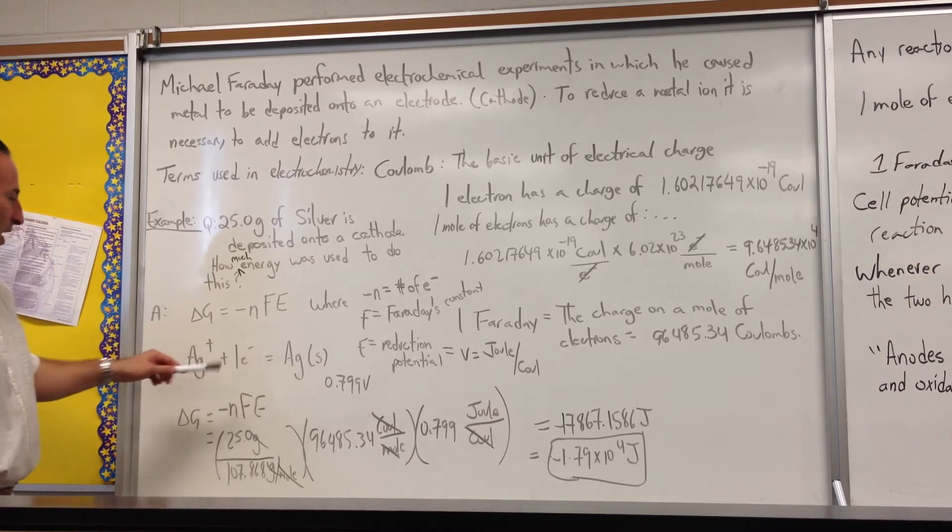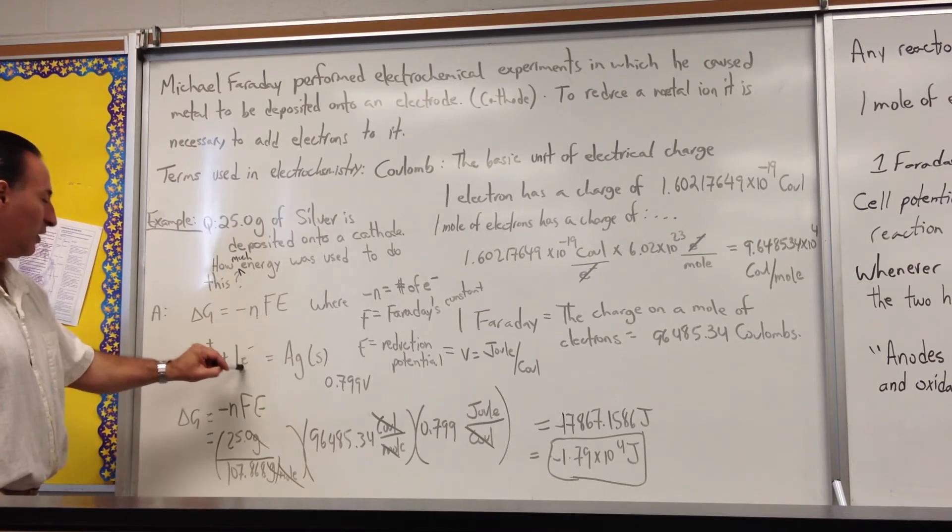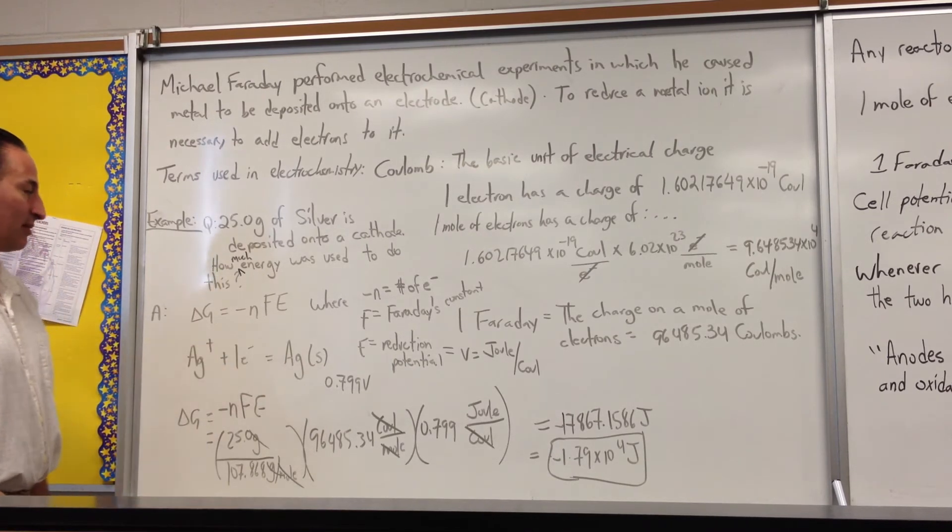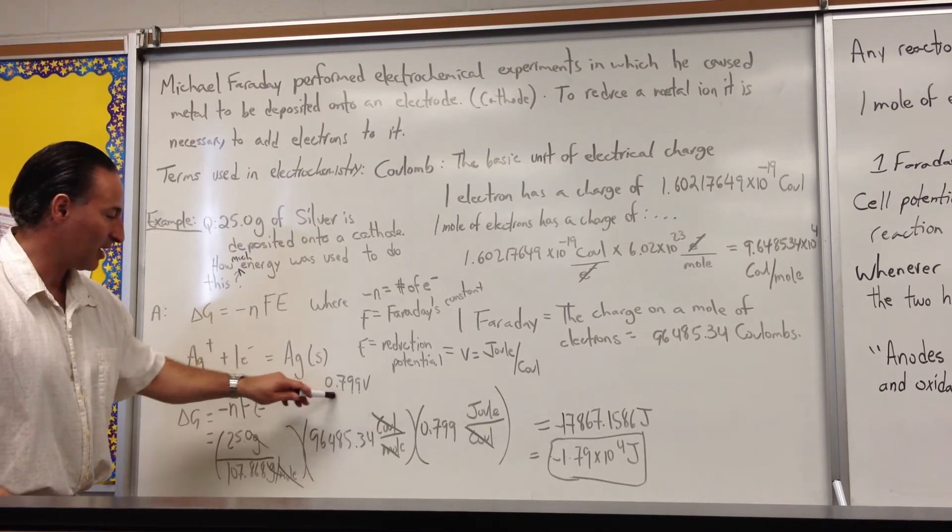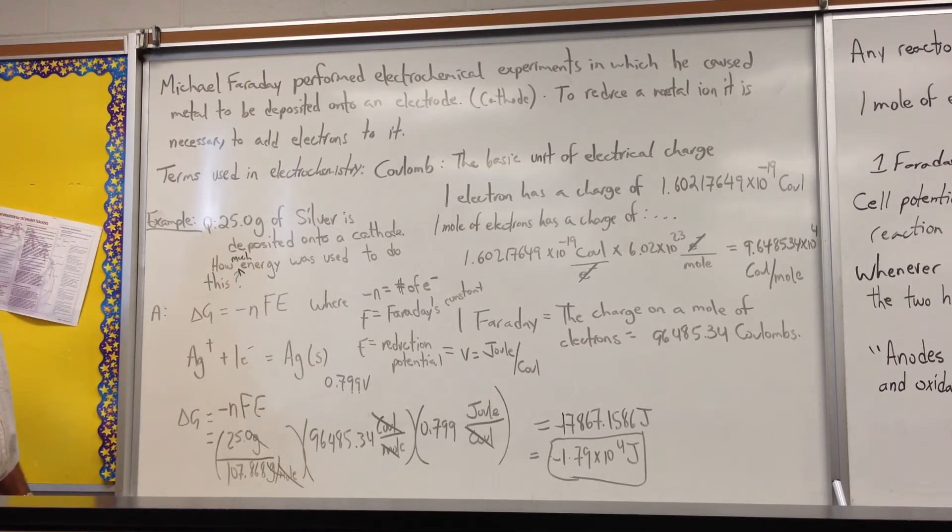When you deposit silver onto a cathode, one electron is necessary to deposit one atom. So if you had a mole of silver, it would take a mole of electrons to deposit that mole of solid silver. The electrochemical potential for that reaction is 0.7799 volts.